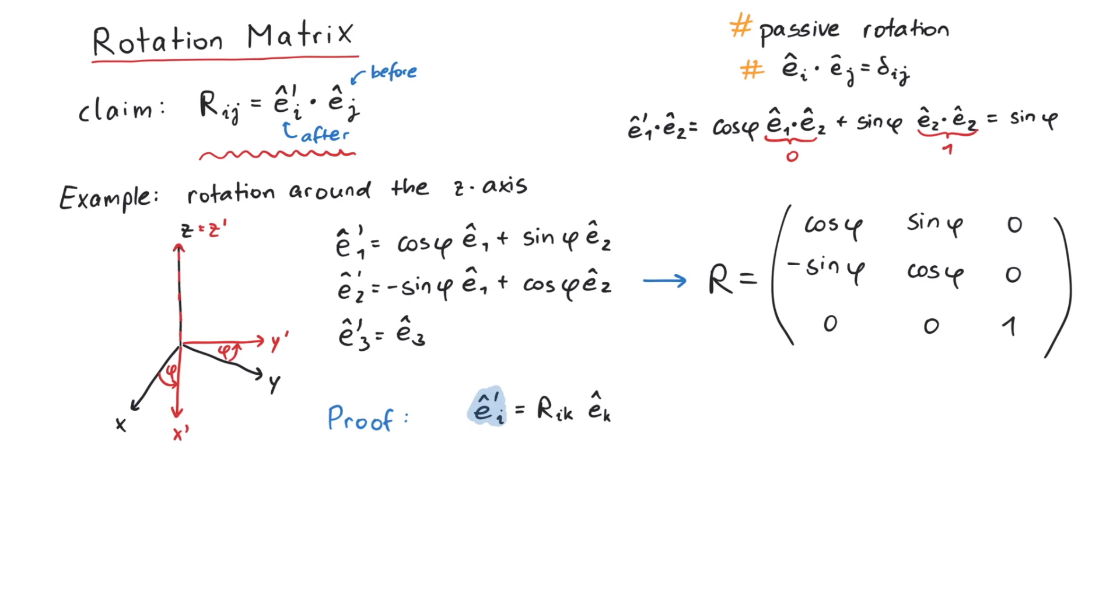Just to be sure, this and this object are vectors. This uppercase R is just a number. Now we take the dot product with the j-th old basis vector. On the right-hand side, we can simplify this dot product to a Kronecker delta, kj, which contracts with the k-index of the rotation matrix to give Rij. And that's actually all there is to it.